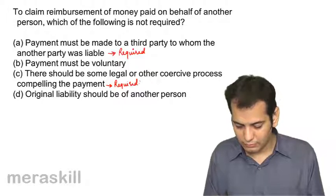An uncertain event on the happening or non-happening of which the performance of a contingent contract depends: A) must be an act of the party, B) must not be an act of the party, C) must be some other independent event, D) may be an act of the parties or some other independent event. The uncertain event should be an independent event — it should not be based on the will of the parties. The answer is C.